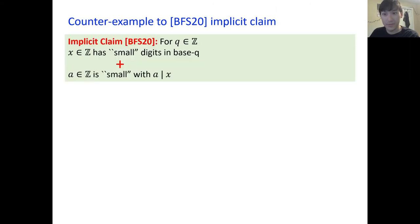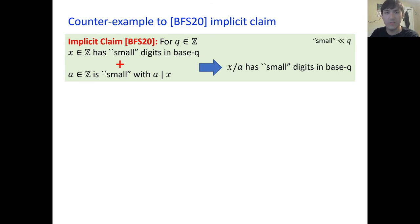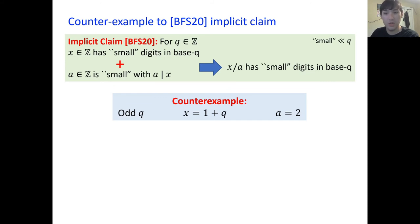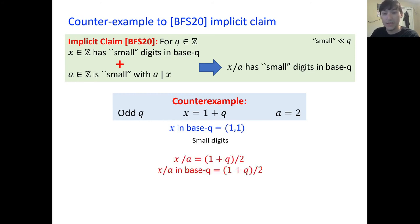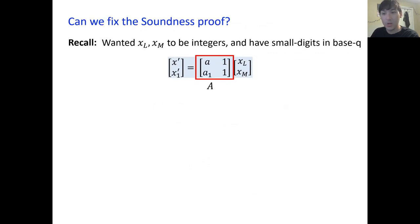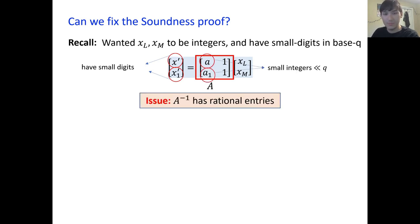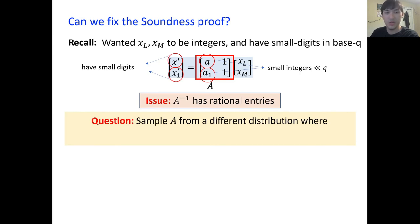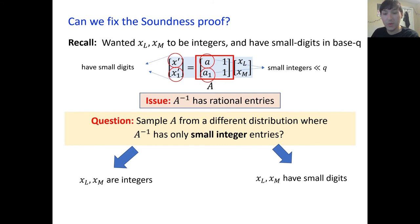As a counterexample, we consider this implicit claim made by Bunz et al.: if X has small digits in base Q, and A is a small integer dividing X, then X divided by A has small digits in base Q. There is a very easy counterexample: take an odd Q, take X equal 1 plus Q, and A equal to 2. Then X in base Q has small digits — they're 1 and 1. But X divided by A equals (1 plus Q) over 2, which in base Q is a single large digit. So can we fix the soundness proof? Recall that we wanted X_L and X_M to be integers with small digits in base Q, and that the issue was that A inverse had rational entries. The question is: can we sample A from a different distribution such that A inverse only has small integer entries? If we have this, then we are able to extract integers X_L and X_M, and furthermore they will have small digits, and we're done.